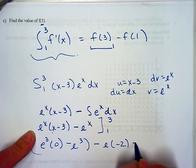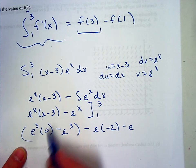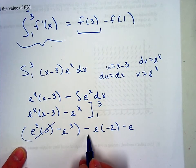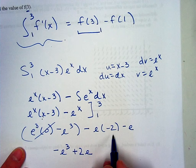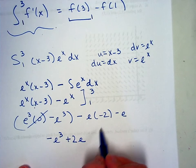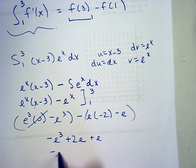e to the 3 times the 0 minus e to the 3 minus e to the 1st times negative 2 minus e to the 1st. And if I simplify this a little bit, I believe this becomes negative e cubed plus 2e, plus e.